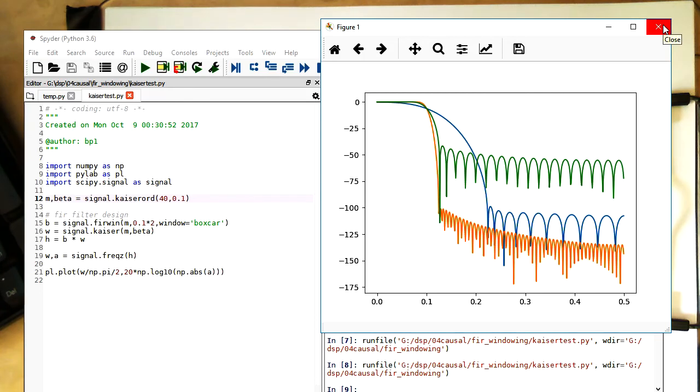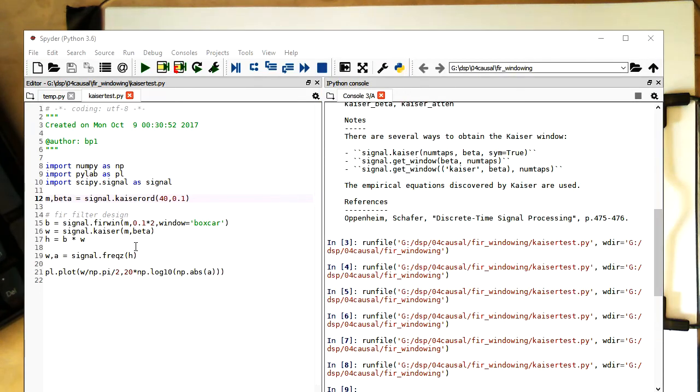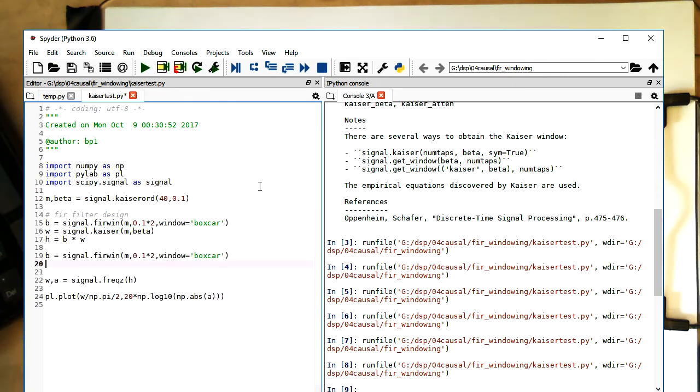So there's if you want to use the firwin command itself, can also generate directly, can directly use the Kaiser window here. So if you want to do this instead and save a few commands, we can do the following.